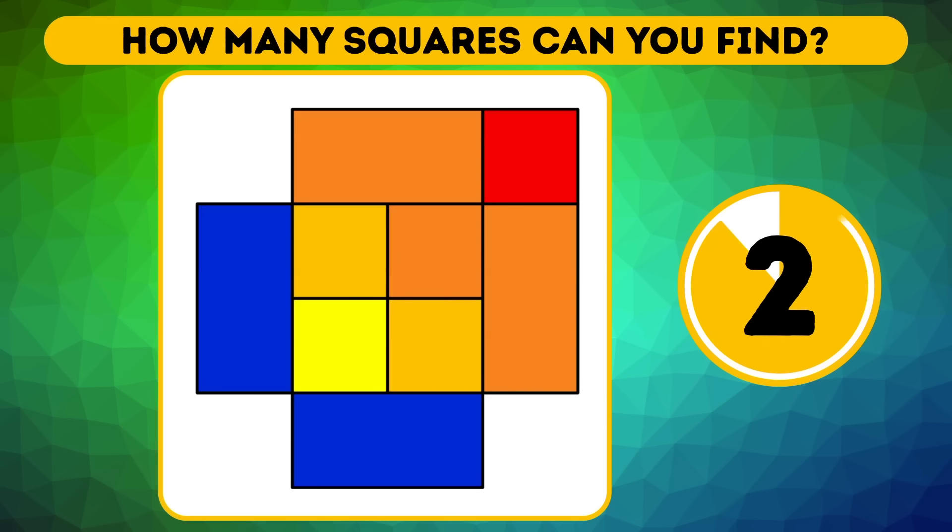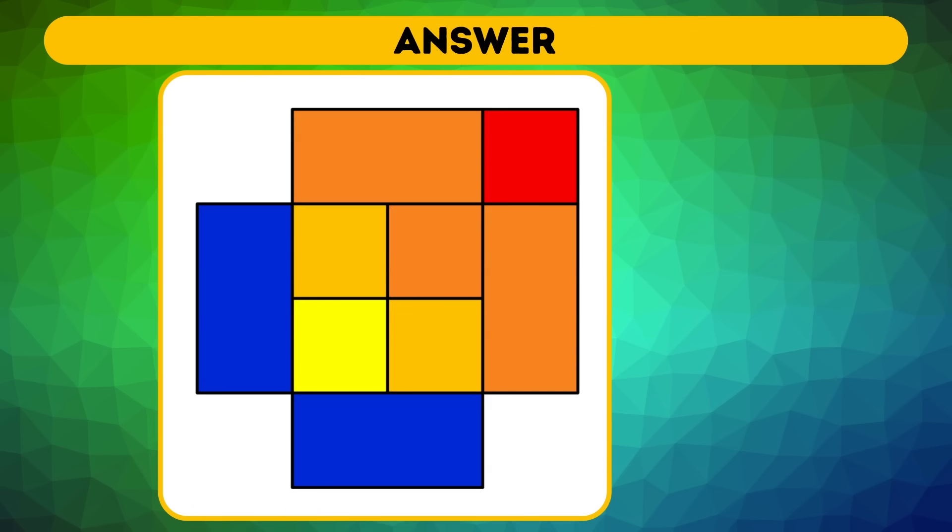Come on, speed up! Time's ticking away! There are 11 squares in this image. Here's how you can find them.